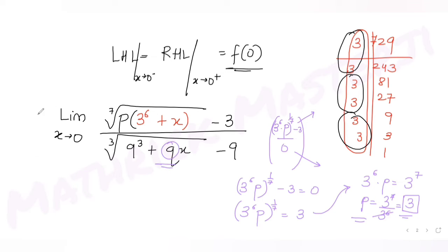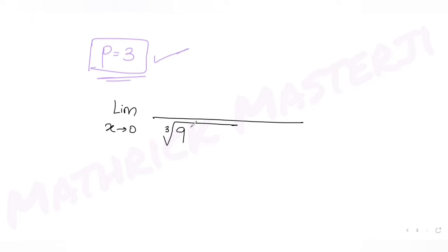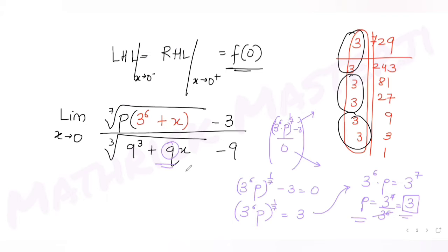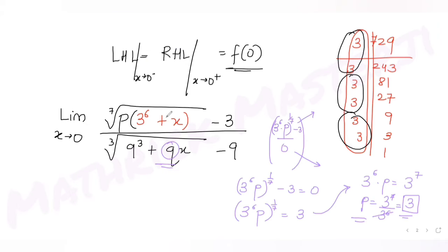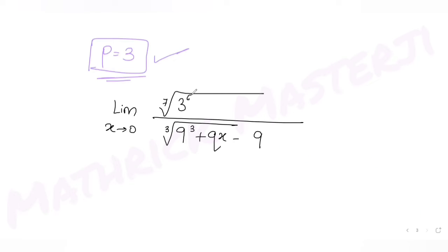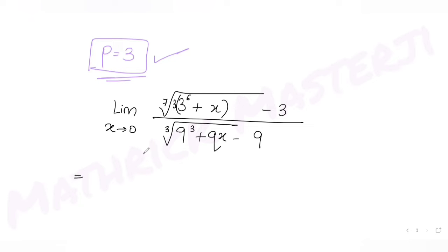Now substituting p = 3 into the limit, we have: limit as x tends to 0 of the seventh root of 3·(3⁶ + x) minus 3, divided by the cube root of (9³ + qx) minus 9. I'll divide both numerator and denominator by 9 to simplify.